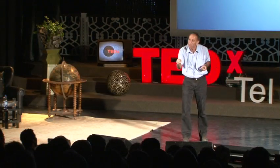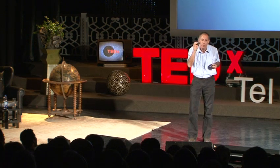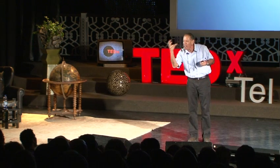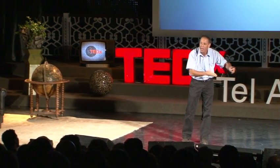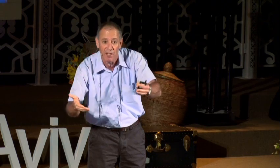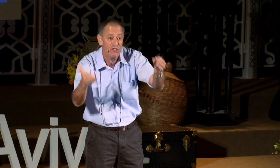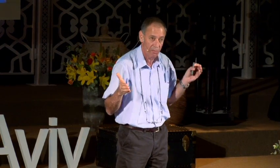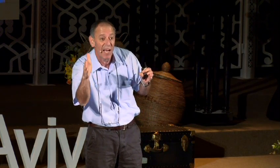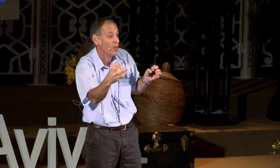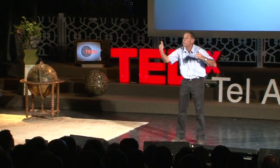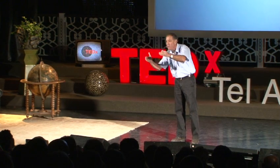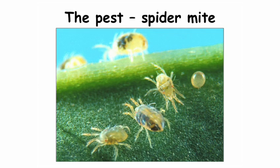Let us go hand in hand and browse through just a few examples: what is a pest, what damage it inflicts on the plant, and what is the natural enemy — the biological control agent, the good bug. In general, I'm going to talk about insects, those six-legged organisms, and spiders or mites, the eight-legged organisms.